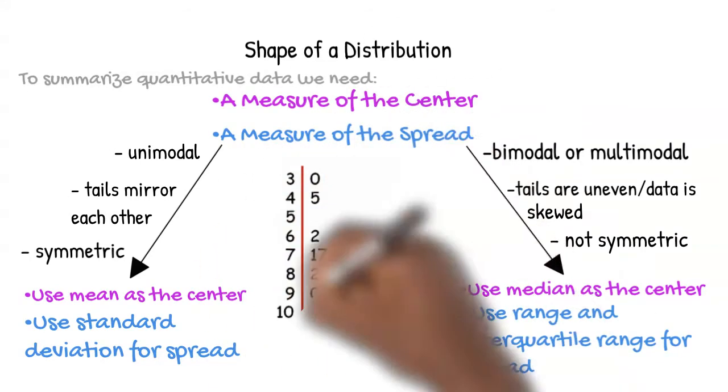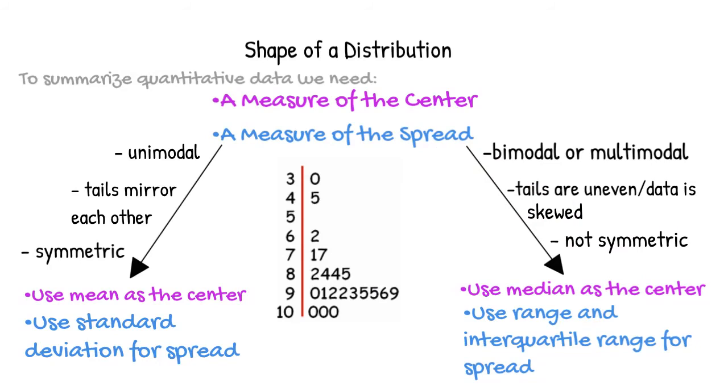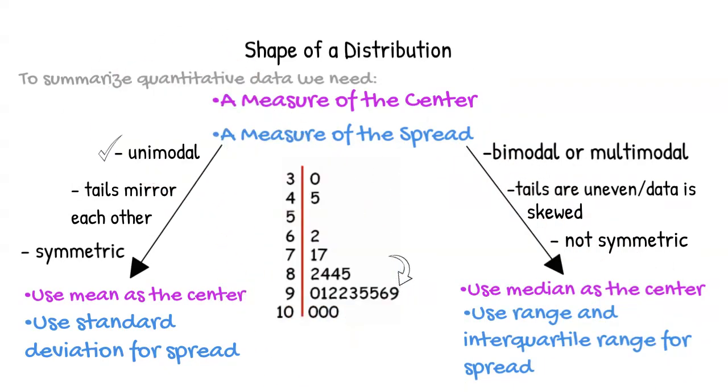Let's look at another example. Here we have a stem and leaf. To visualize the spread, think of it as a sideways histogram. There is one mode, so the data is unimodal.